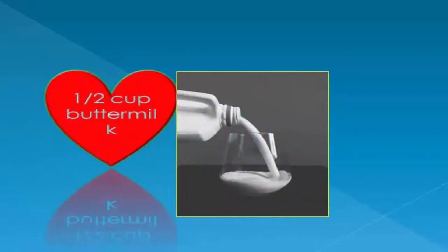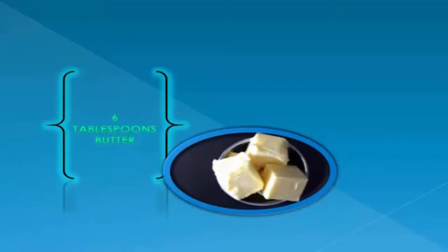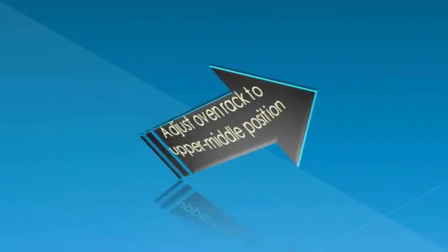A half cup buttermilk, a half cup whole milk, six tablespoons butter. Add all ingredients to list. Directions: adjust oven rack